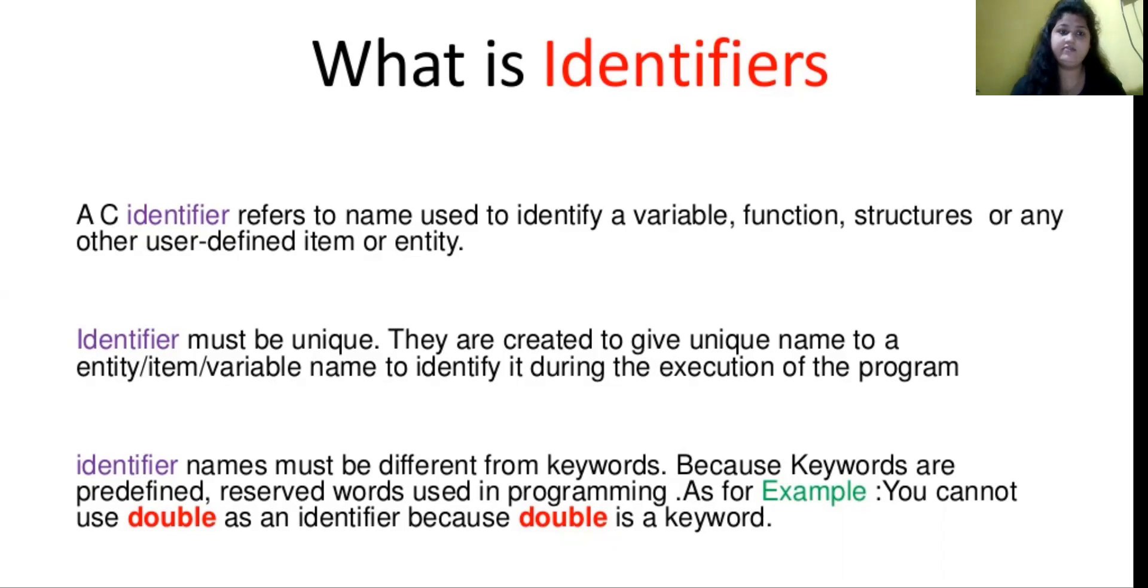C Identifier refers to name used to identify a variable, function, structure or any other user defined item or entity. What do you mean by Identifiers? If you are giving a variable, you can also give it a name. The name is Identifier.